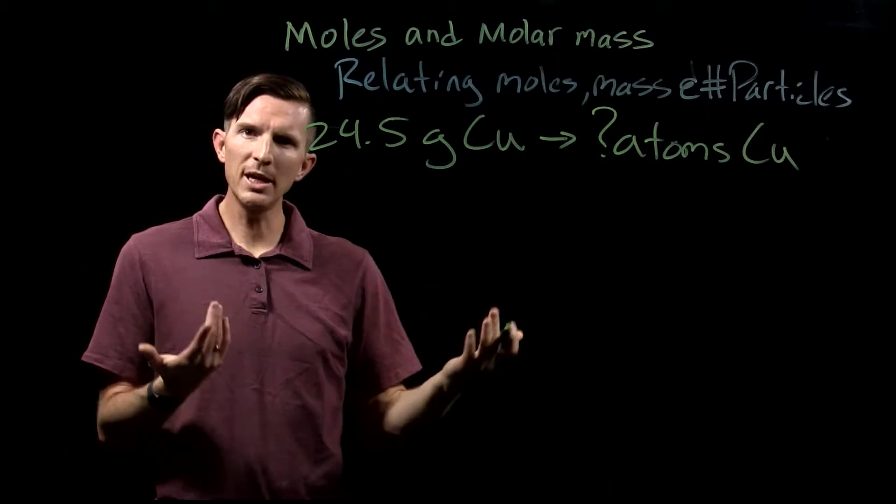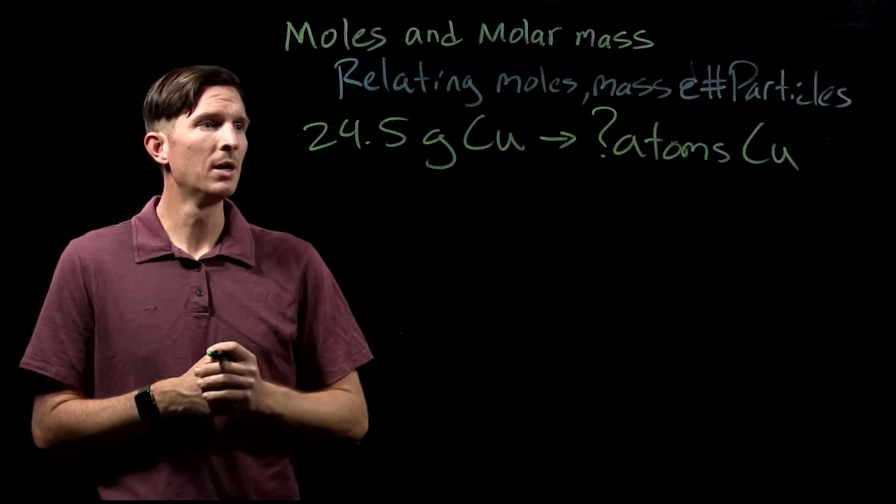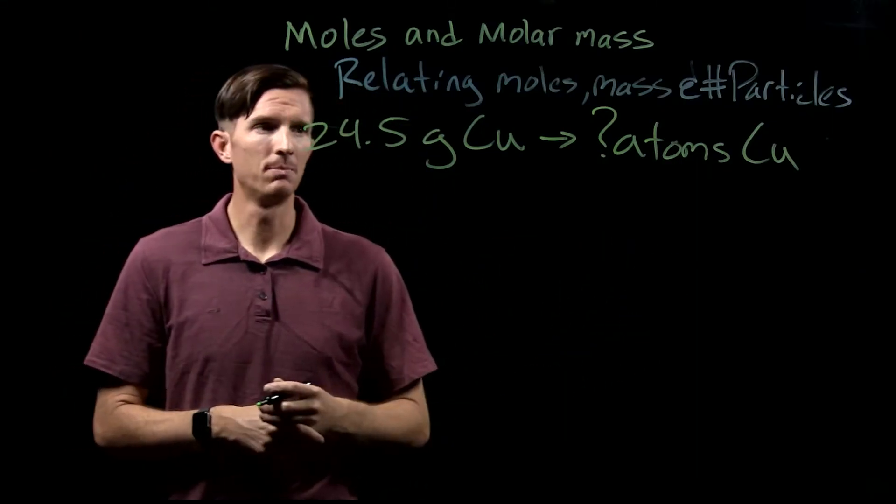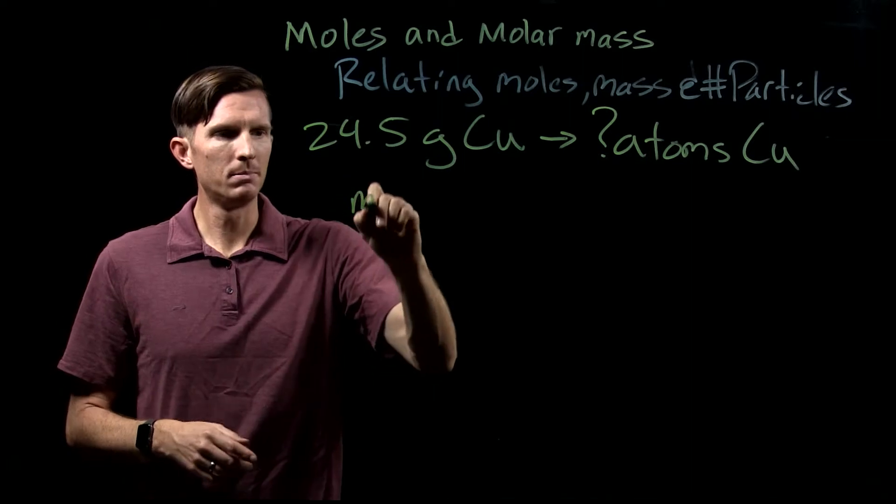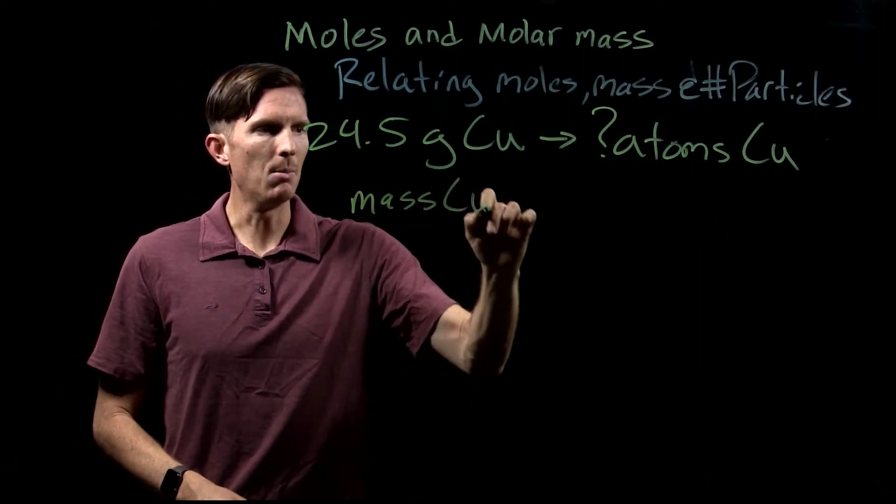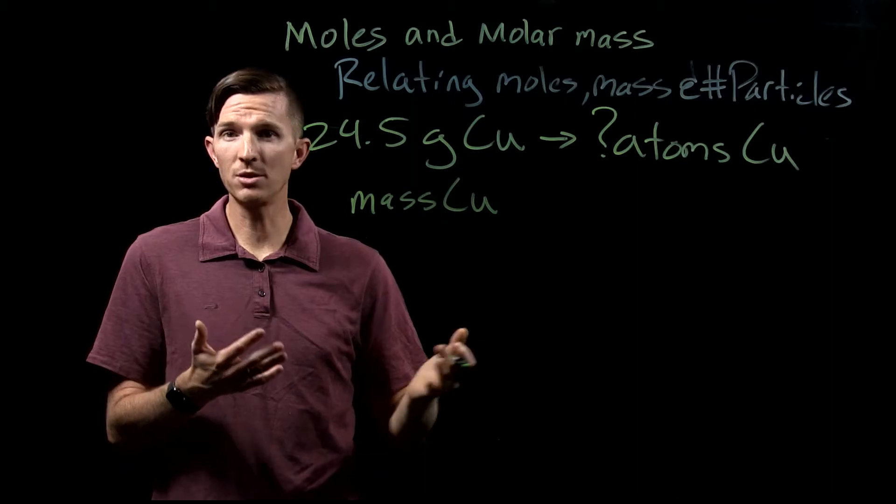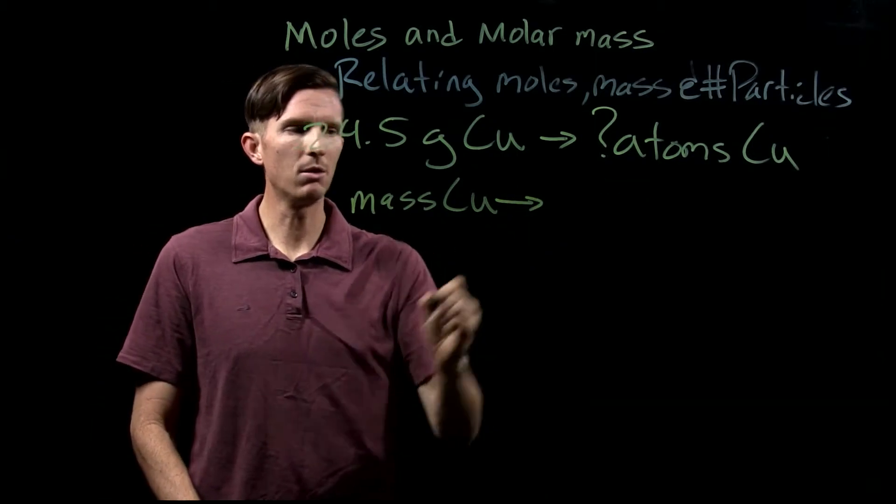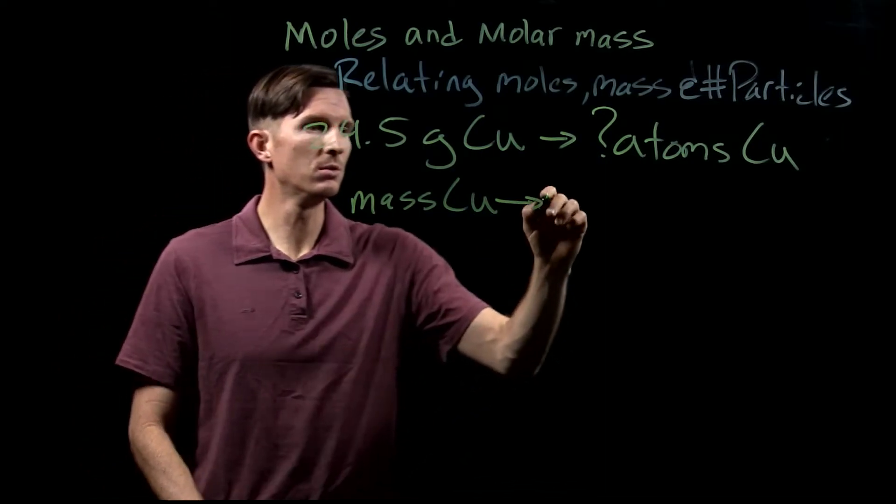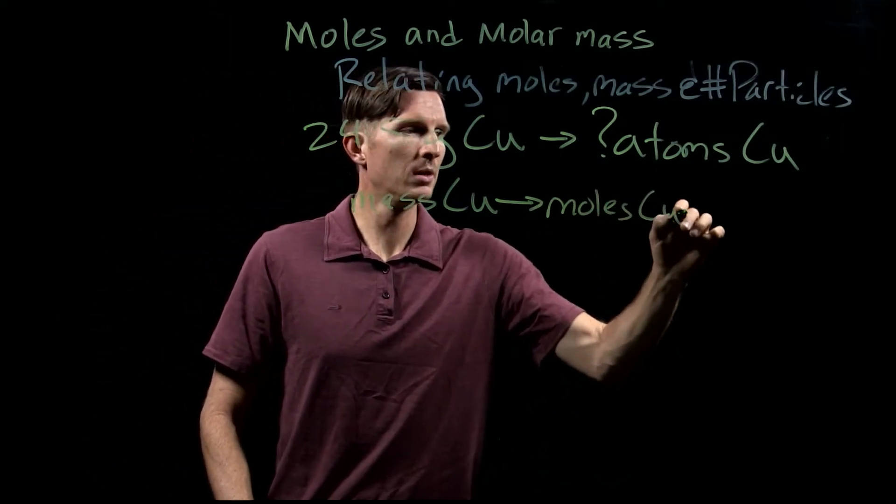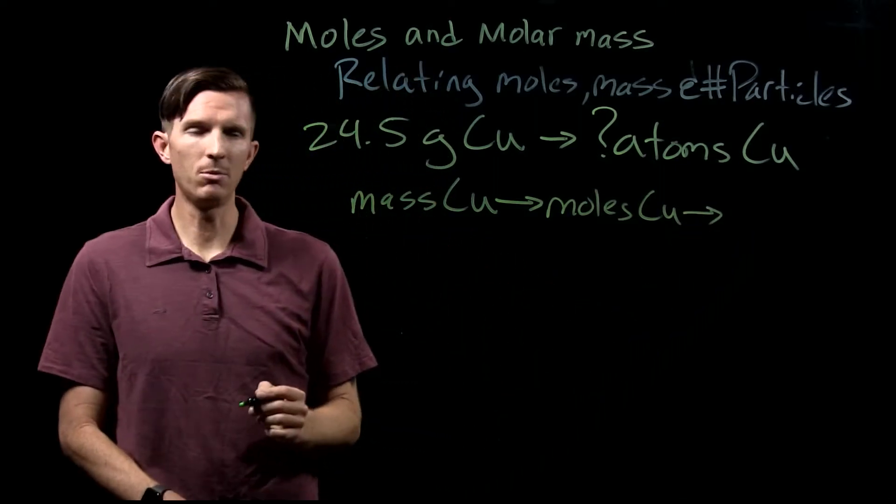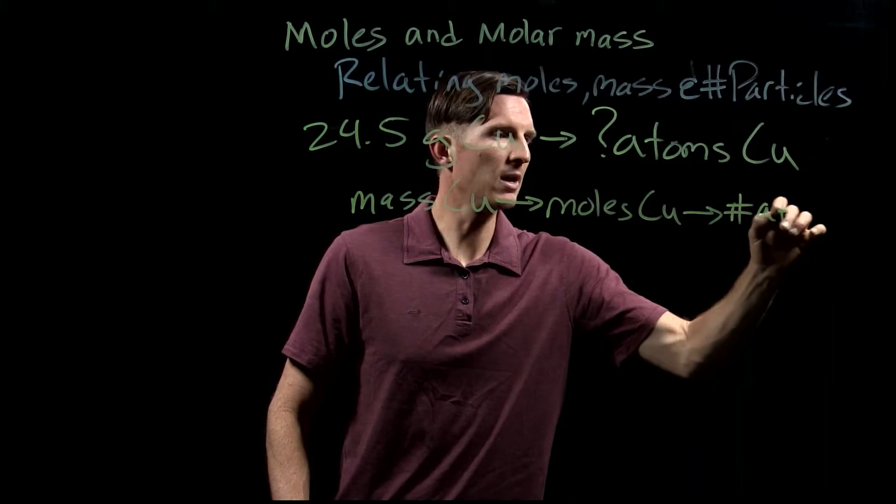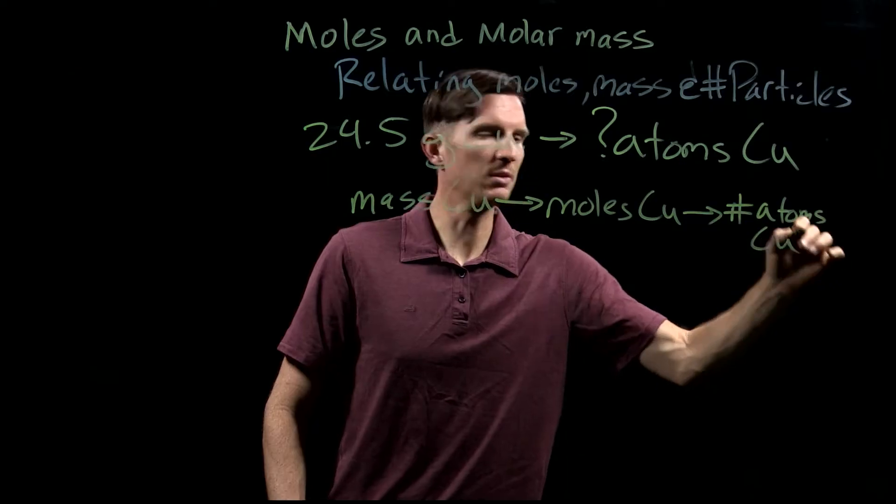We have to think, what relationships do we know that tell us something about the amount, a mass that we can weigh out of copper, and the number of atoms of copper? If I'm going to go from a mass of copper, there's no direct correlation or conversion factor between mass and atoms. But we do know that we can go from the mass of copper to the moles of copper. And then from there, once we have the moles of copper, we can find the number of atoms, specifically of copper.